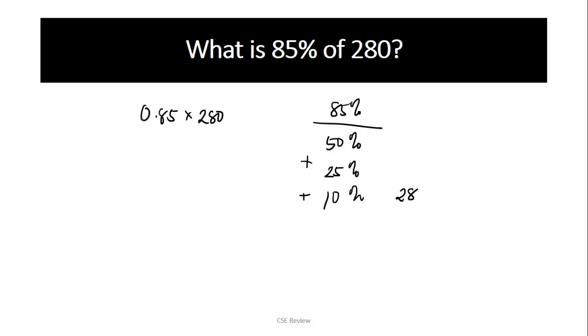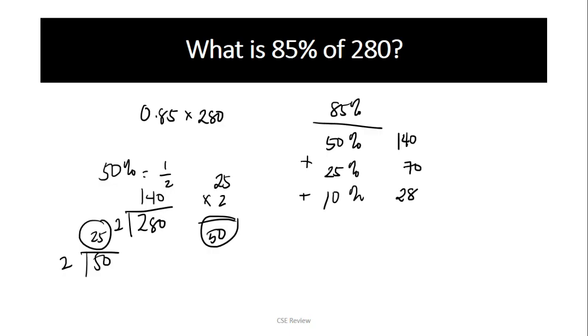50% is easy mentally because 50% means half. 50% equals one half. Half of 280, which is 280 divided by 2, is 140. So 50% is 140. Why is 25% easy to compute? Because two 25s - 25 times 2 equals 50. So 25 equals 50 divided by 2. If you divide the 50%, you get 25%. Our 50% is 140, half of that is 70. That's our 25%.